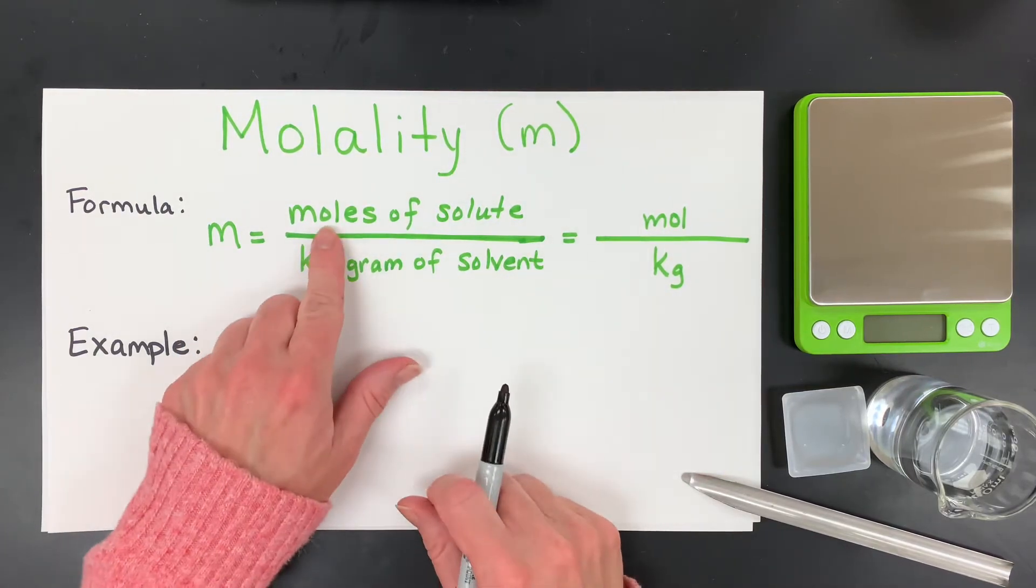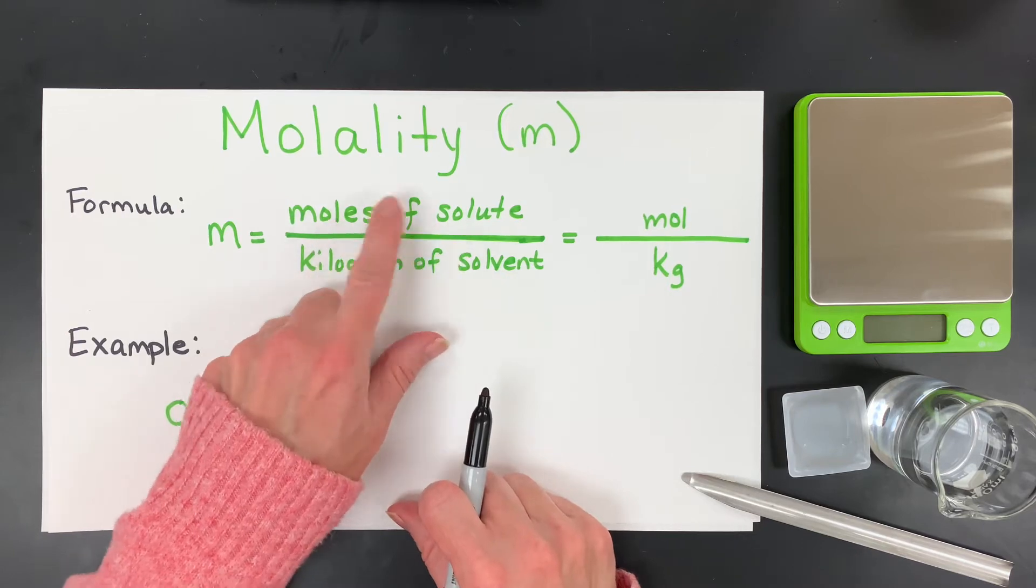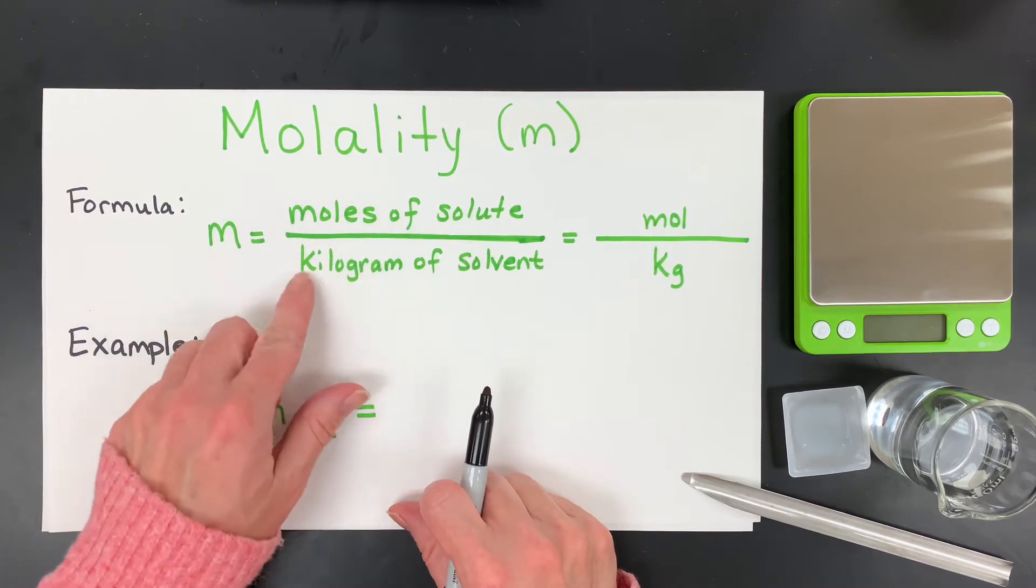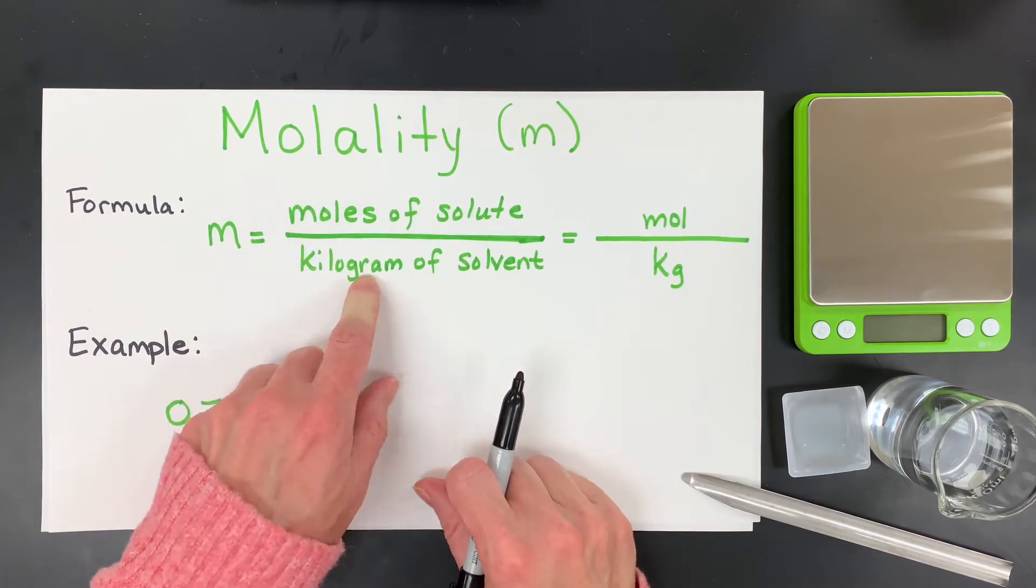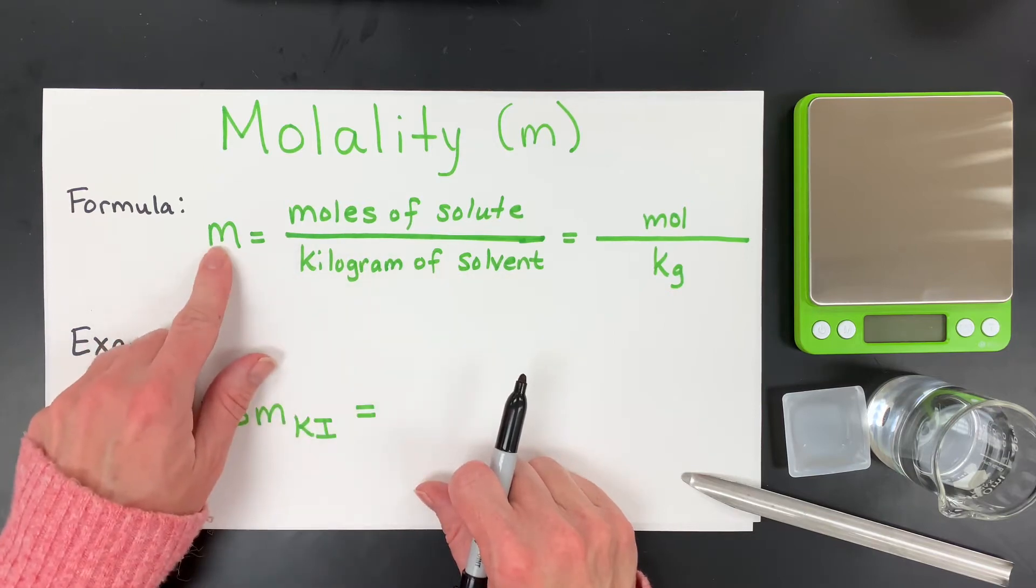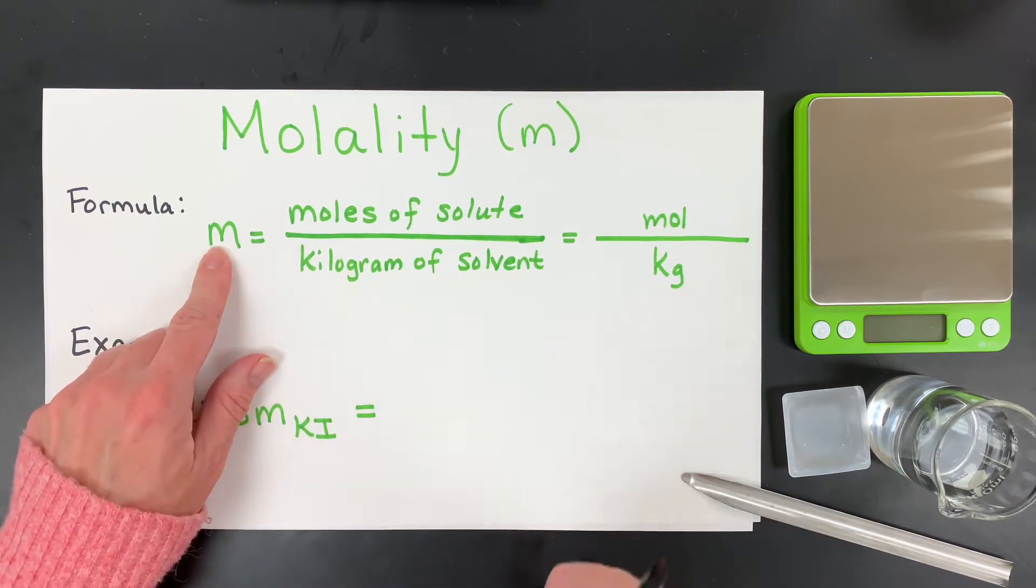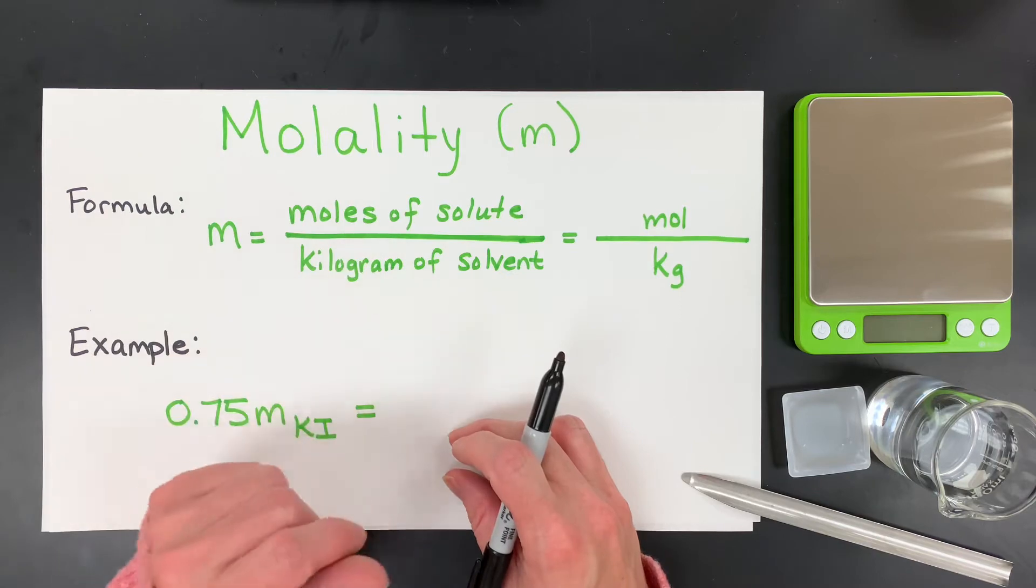Molality is defined as the moles of solute, or the amount of solute in moles, divided by the kilogram or kilograms of solvent. It's given the lowercase symbol m, and do not get it confused with molarity.